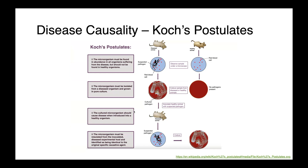Koch's Postulates states that the microorganism must be found in every animal suffering from disease, but not in any healthy animals. We must be able to grow that organism in pure culture from those diseased animals. That isolated organism must then be able to be introduced into a healthy animal to reproduce disease, and we must then be able to re-isolate that organism from the animal that was experimentally infected.